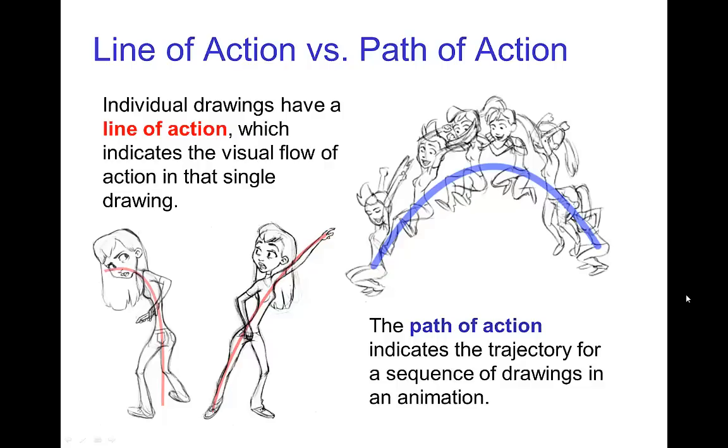On the other hand, the path of action is the visual flow for a sequence of drawings, the trajectory that is indicated through a sequence of drawings. An easy way to remember the difference is the line of action is for a single drawing and path of action would be for a sequence of drawings.